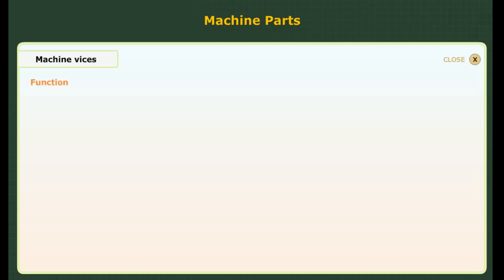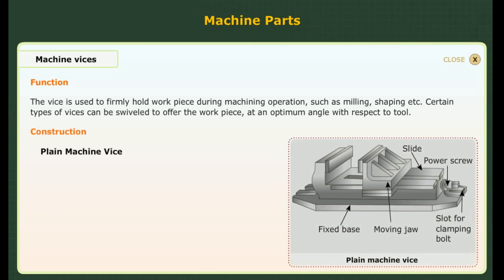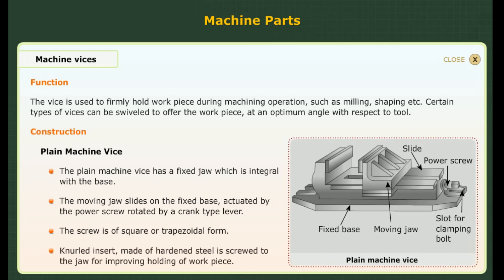Machine vices. Function: the vices are used to firmly hold a workpiece during machining operations such as milling, shaping, etc. Certain types of vices can be swivelled to offer the workpiece at an optimum angle with respect to the tool. Construction: as shown in the figure, the plain machine vice has a fixed jaw which is integral with a base. The moving jaw slides on the fixed base, actuated by the power screw rotated by a crank type lever. The screw is of square or trapezoidal form. Knurled insert, made of hardened steel, is screwed to the jaw for improving holding of the workpiece.